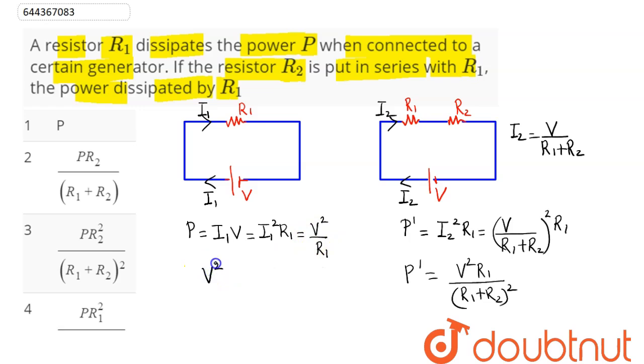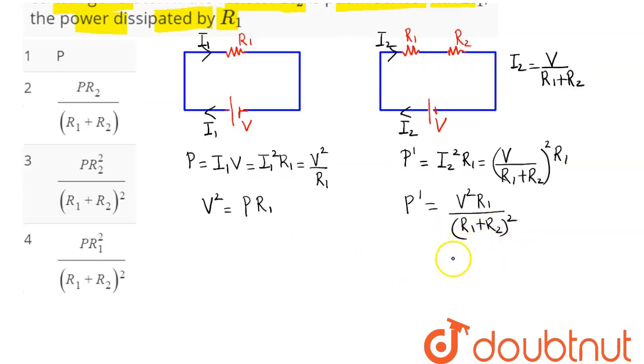Now if we substitute the value of V squared as P times R1, because we don't know the value of V, substituting V squared as P times R1 times R1 becomes P times R1 squared divided by R1 plus R2 whole squared.